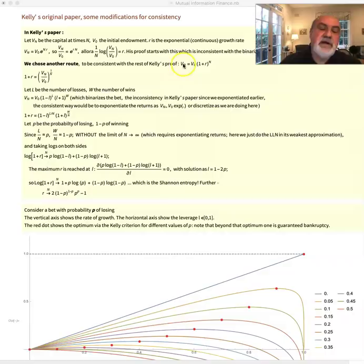So I start with, I modified the proof in Kelly using the right limits. But let's say we start with, you have Vn is the value of the portfolio, or your total wealth at period n,